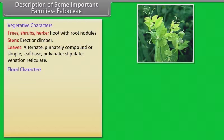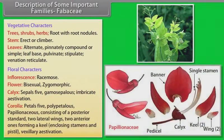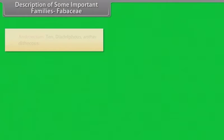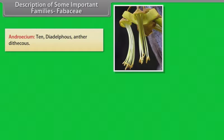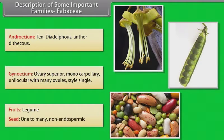Floral characters: inflorescence racemose; flower bisexual, zygomorphic; calyx — 5 sepals, gamosepalous, imbricate aestivation; corolla — 5 petals, polypetalous, papilionaceous, consisting of a posterior standard, two lateral wings, and two anterior ones forming a keel enclosing stamens and pistil, vexillary aestivation. Androecium: 10, diadelphous, anthers dithecous. Gynoecium: ovary superior, monocarpellary, unilocular with many ovules, style single. Fruits: legume. Seeds: one to many, non-endospermic.